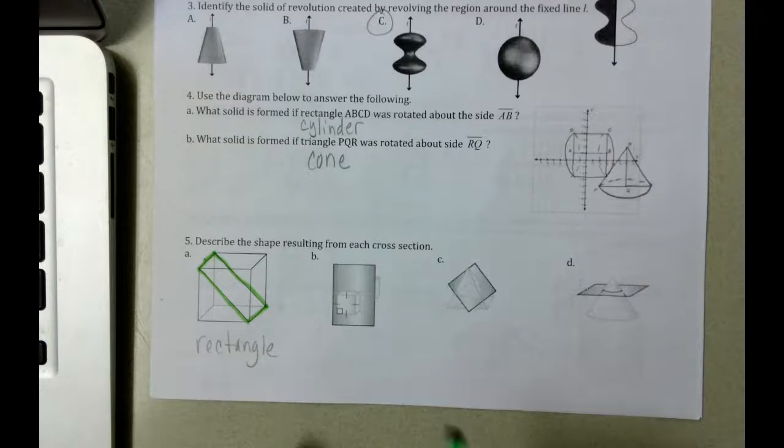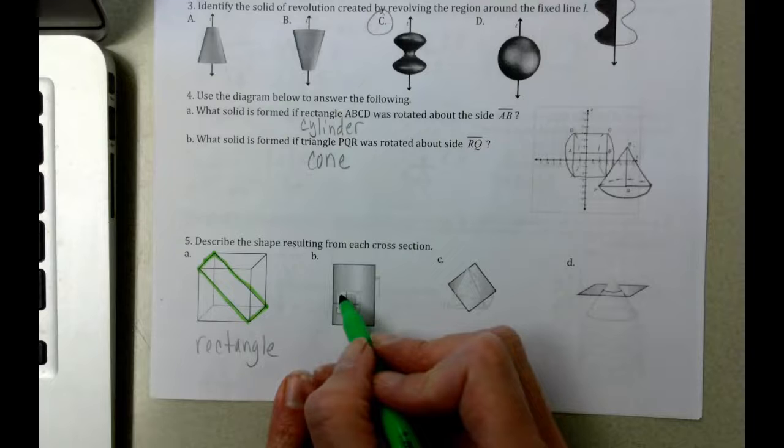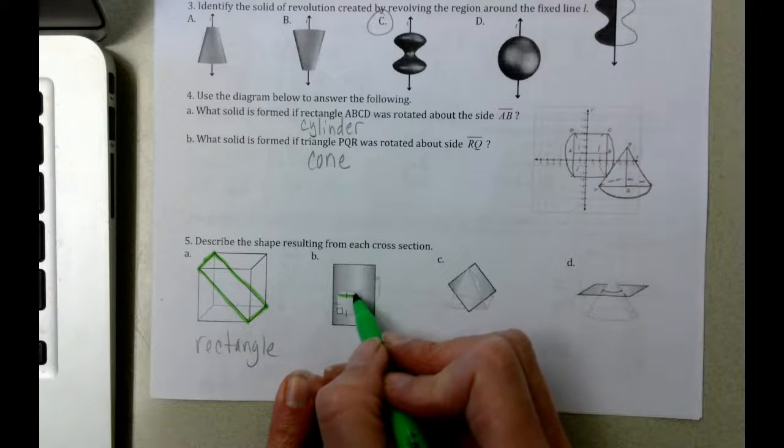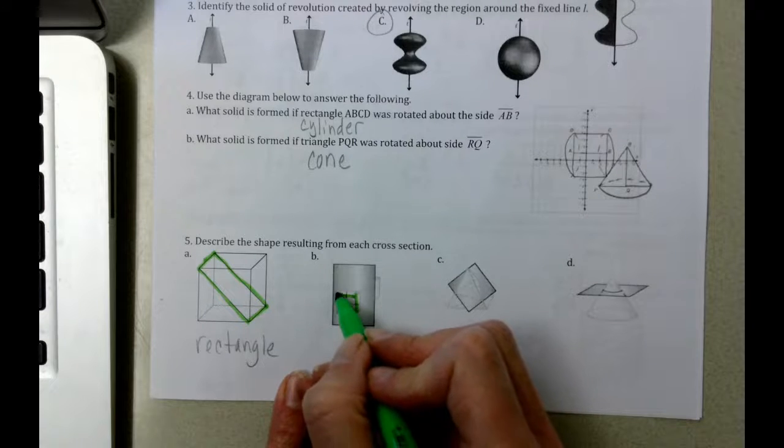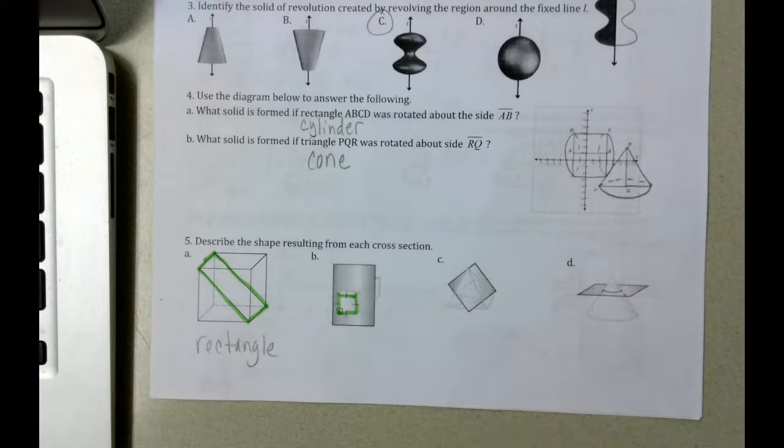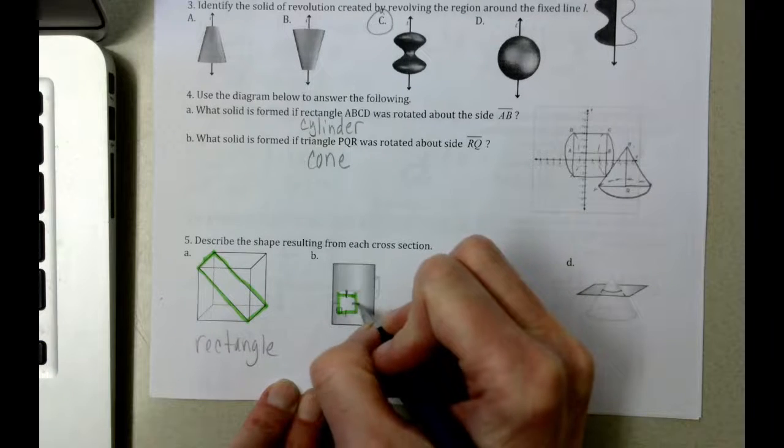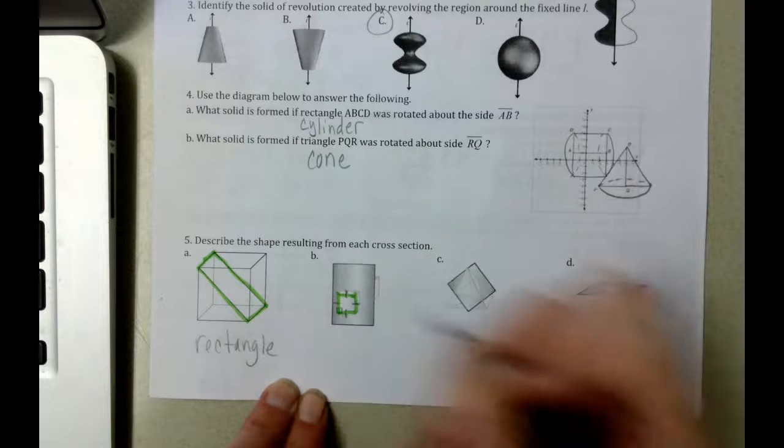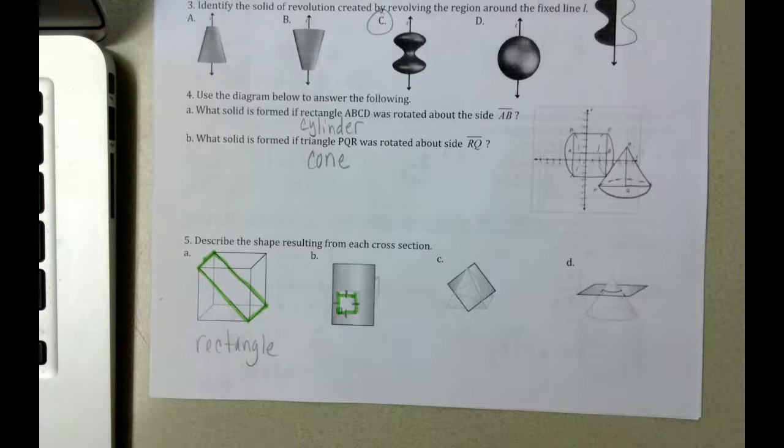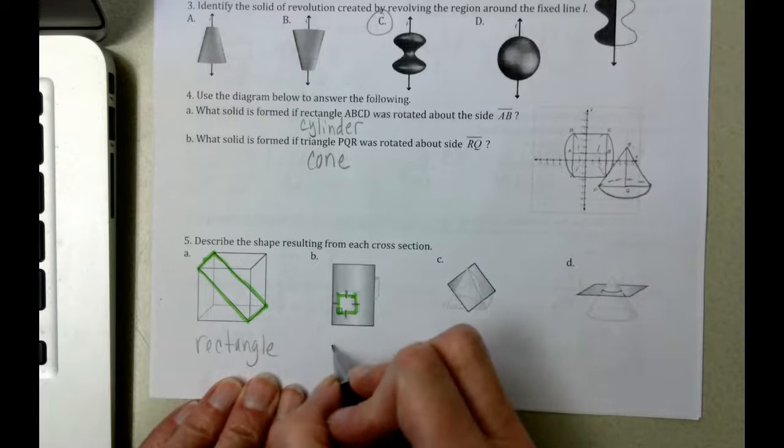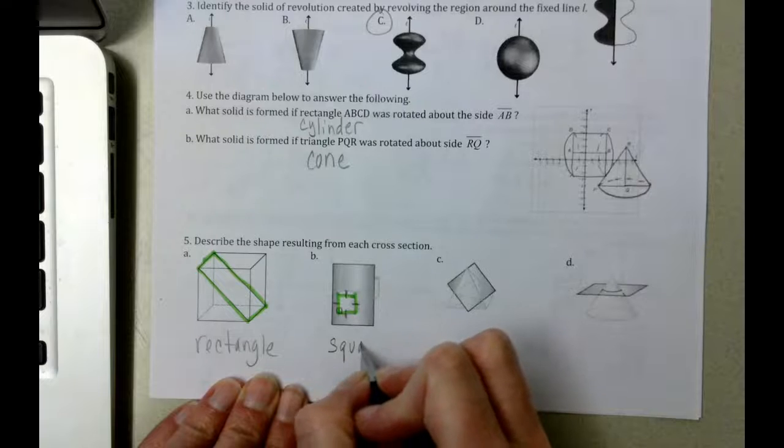On letter B, what we can see is this picture here, and I didn't do very well highlighting it, but there's a mark here and there's a mark here and there's a mark here and there's a mark here, indicating that all four sides are the same length, which means that this is a square.